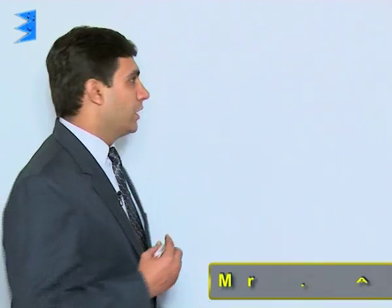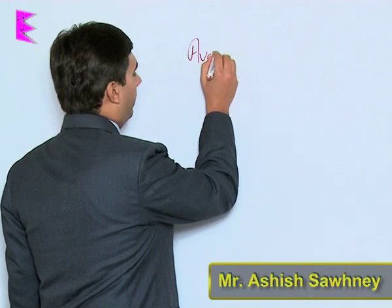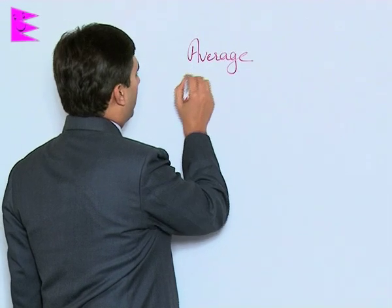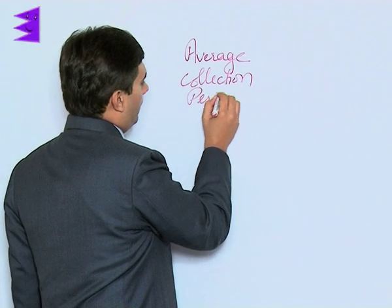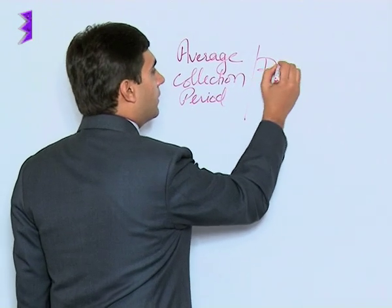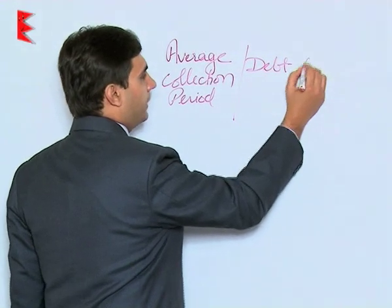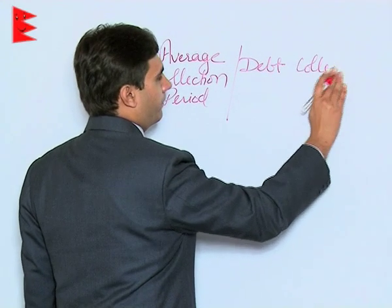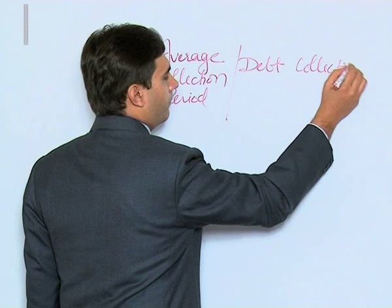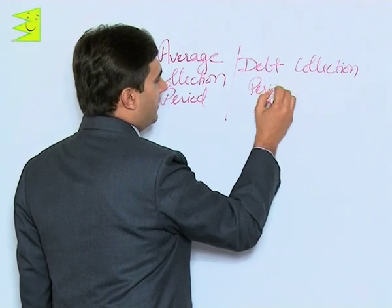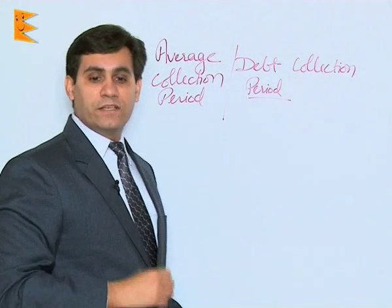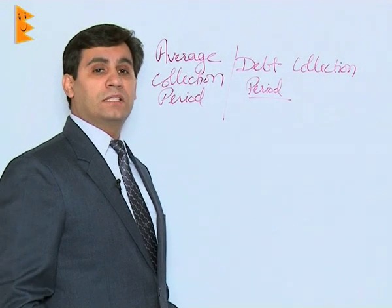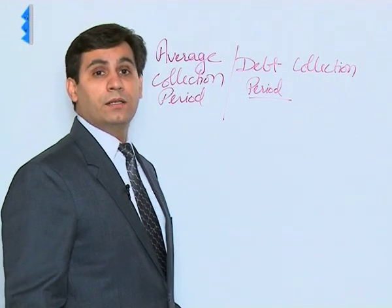Another concept associated with debtors turnover ratio is average collection period, also referred to as debt collection period. As the name suggests, this figure gives us an indication about the time in which our debtors are being collected.